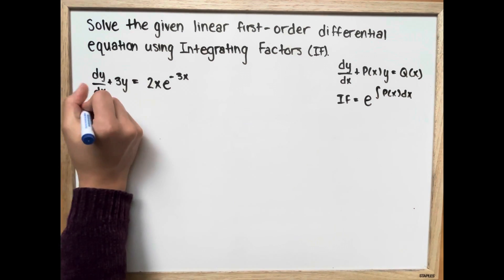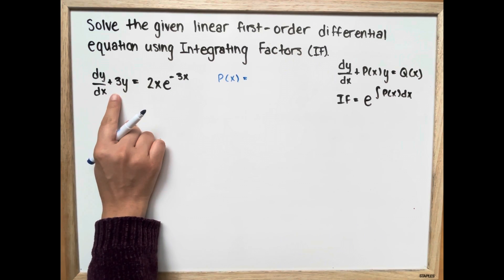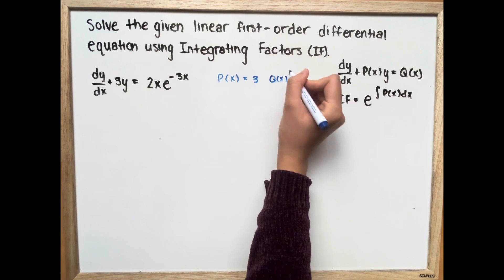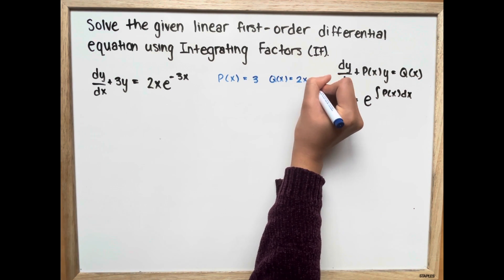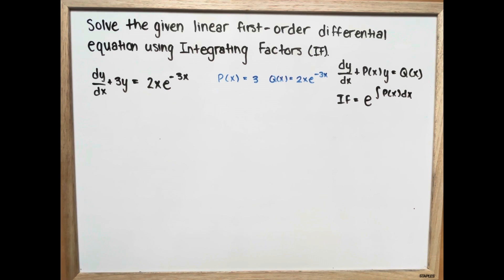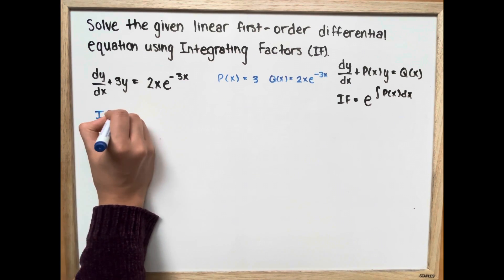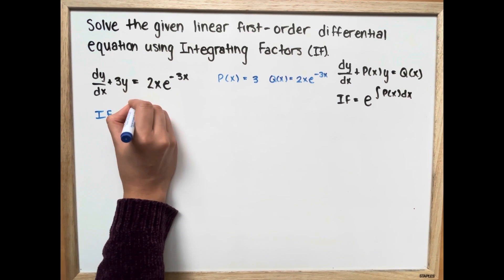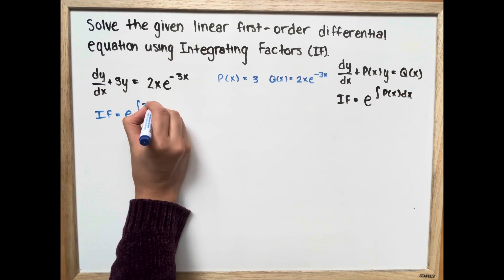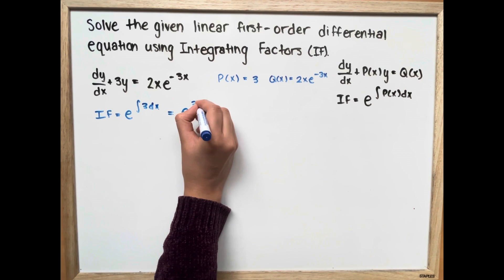First, we define our P(x), which is going to equal 3, and our Q(x), which is going to be 2x times e to the power of negative 3x. So now we find our integrating factor, which is equal to e raised to the integral of 3 dx, giving us e to the power of 3x.